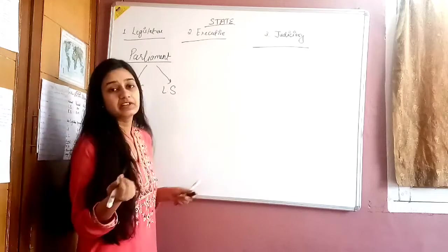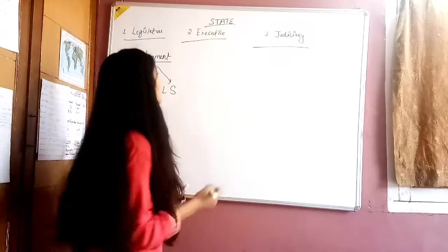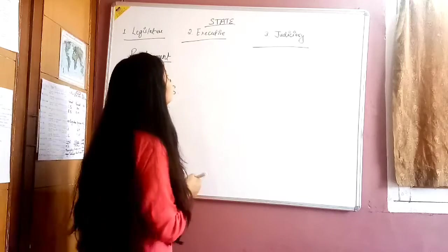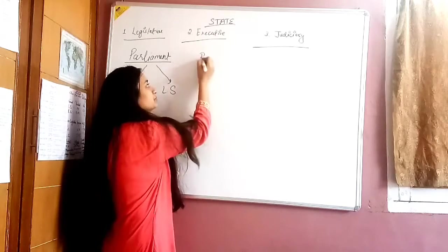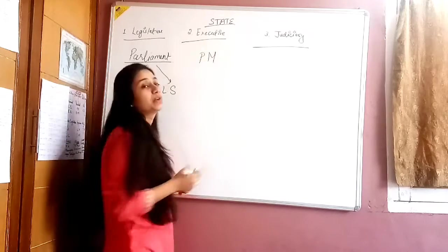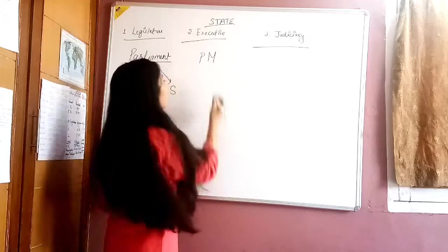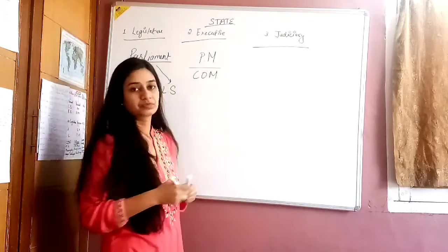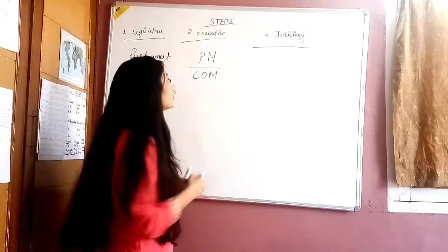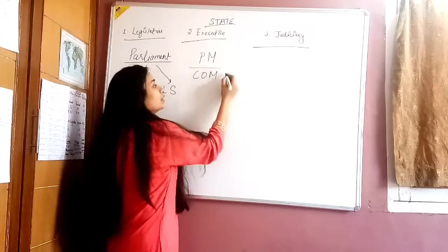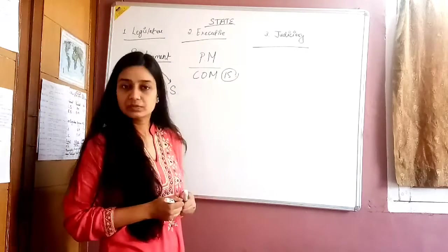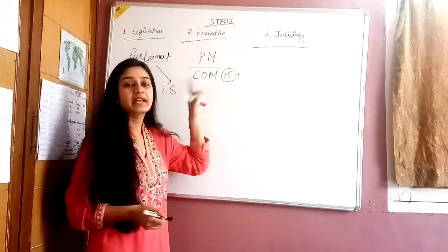Let's talk about who is in the central level of executive. In the central level of executive, we have our Prime Minister. And with the Prime Minister, we have our Council of Ministers at the central level. So the Council of Ministers plus PM, we have our total 15 members.